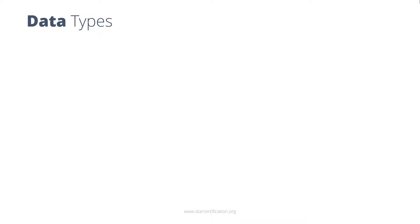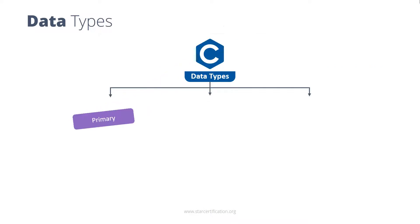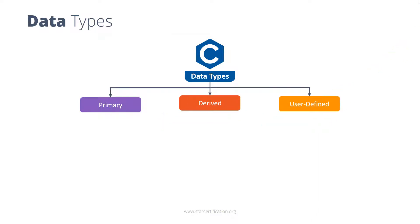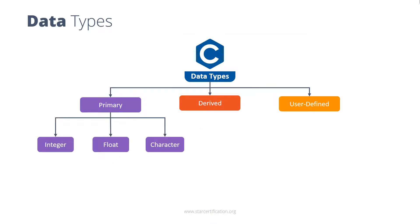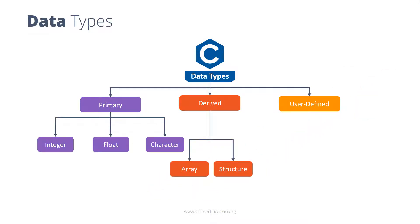There are three main types of data types in C language: primary, derived and user-defined. Primary data types are the most common and fundamental data types for all programming languages, and they represent numbers and characters. Derived data types are obtained from primary data types, and user-defined data types are defined by the programmer. For programs that need a data type representing no value, you can use the void data type, which is mainly used in functions and pointers that do not return any value.